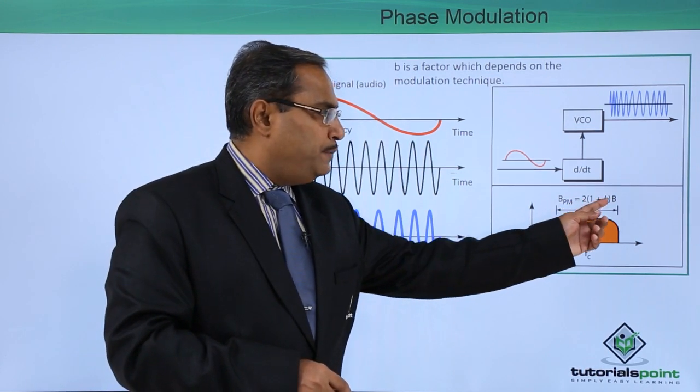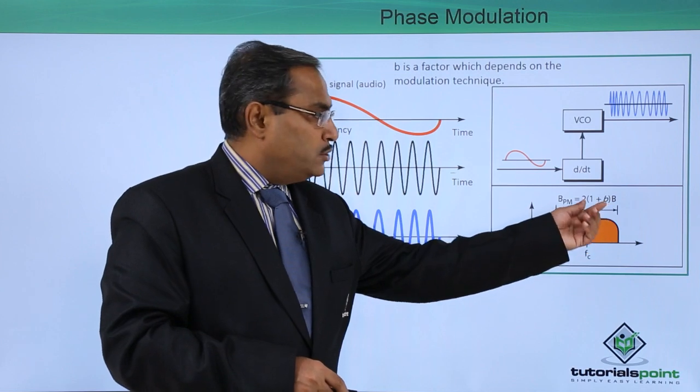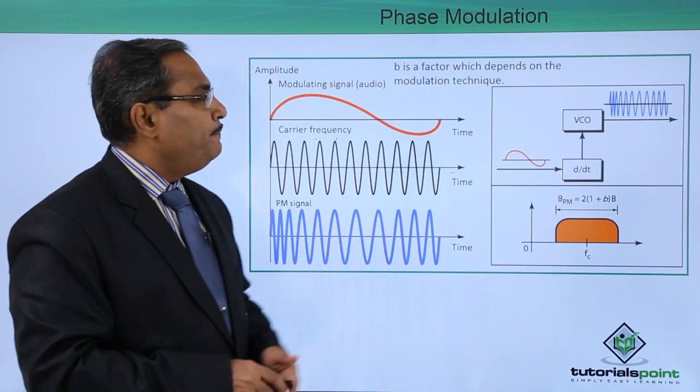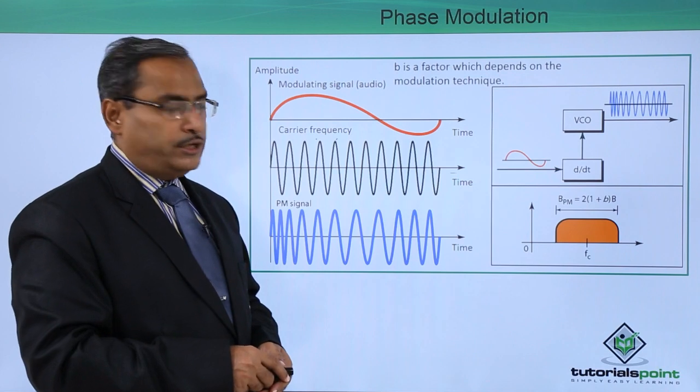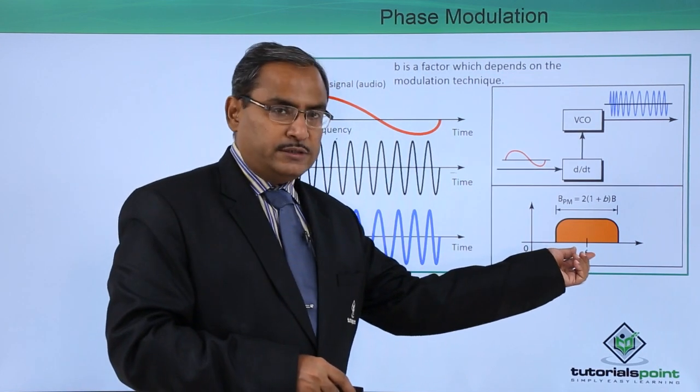2 into 1 plus b into capital B. This b is actually denoting a factor which depends on the modulation technique. And this is our carrier frequency.